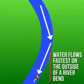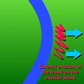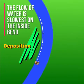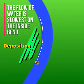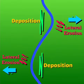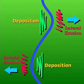Water flows fastest around the outside of the river bend, leading to lateral erosion of this riverbank. The flow of water is at its slowest on the inside bend, leading to deposition in this area. This will alternate with each new meander.